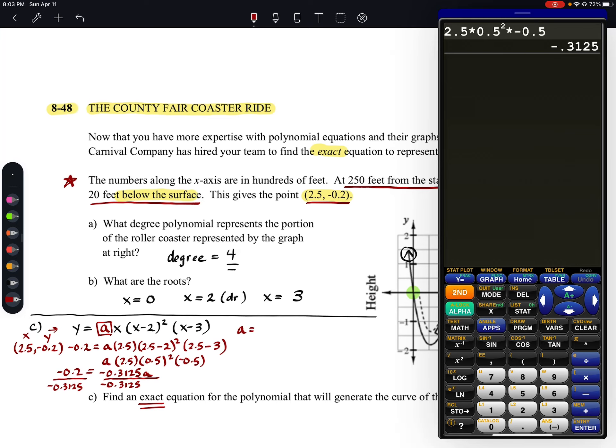We'll do that on the calculator. Negative 0.2 divided by negative 0.3125. And you see we get 0.64. So a is equal to 0.64.